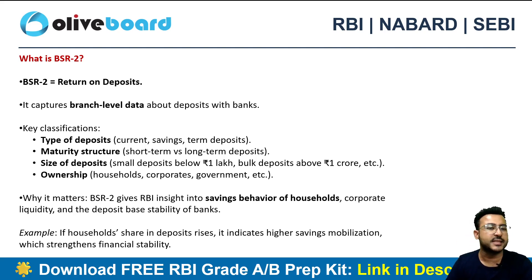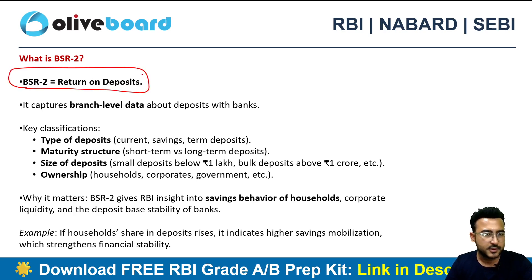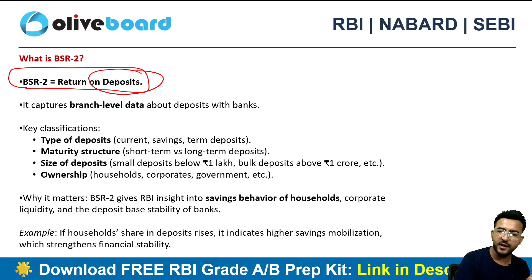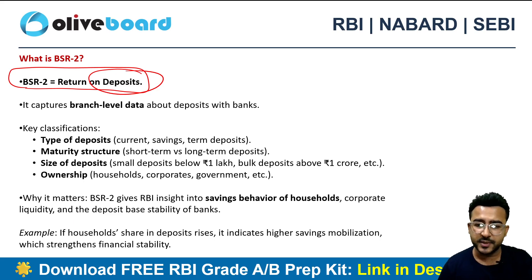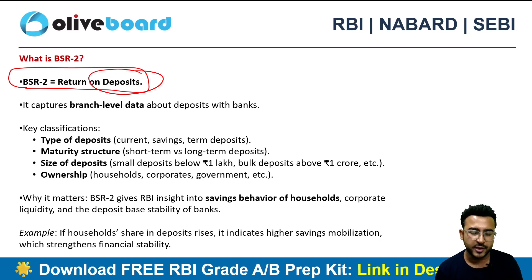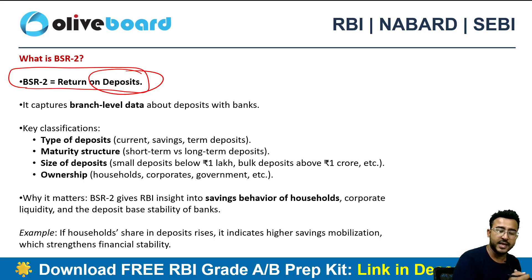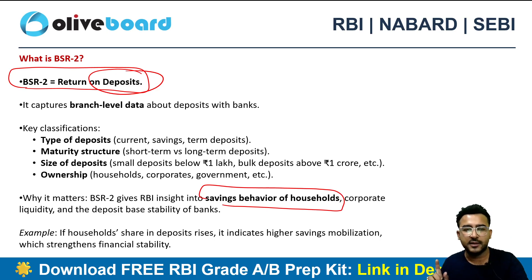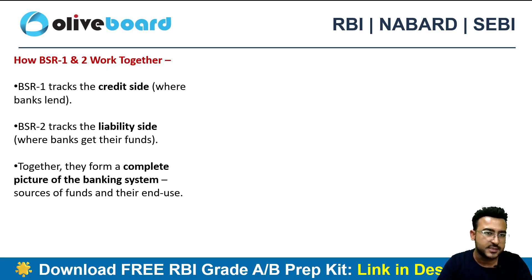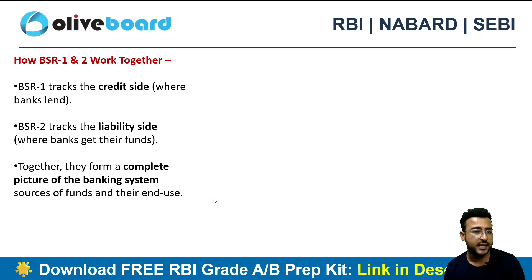BSR 2 is a return on deposits — what kind of deposits you are having in your bank, whether FDs, savings accounts, or current accounts. It covers type of deposit, maturity structure, how much FDs or deposits are maturing in a particular period, size of deposit, and who owns the deposit — whether household, corporate, or government organizations. It gives insights into the saving behavior of households. So BSR 1 is related to credit and BSR 2 is related to deposits — that's the bare minimum you need to know.